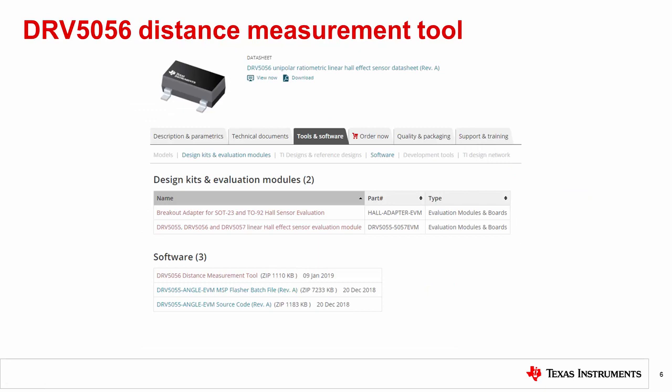A convenient Excel implementation of this design procedure is available for download in the Tools and Software tab of the DRV5056 product folder. Click the link for DRV5056 distance measurement tool to download the file.